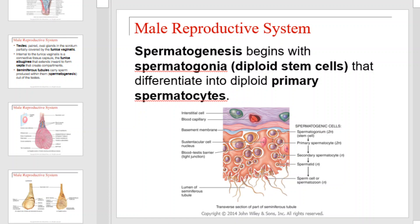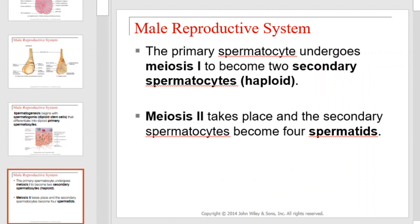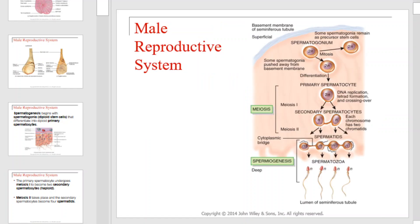Spermatogenesis begins with spermatogonia, or diploid stem cells, that differentiate into diploid primary spermatocytes. The primary spermatocyte undergoes meiosis I to become two secondary spermatocytes, which are haploid cells containing half the genetic complement of the original spermatocyte. Meiosis II takes place, and the secondary spermatocytes become four spermatids.